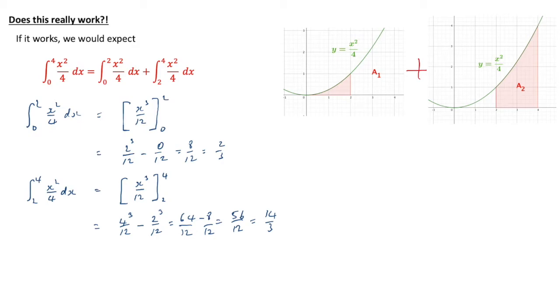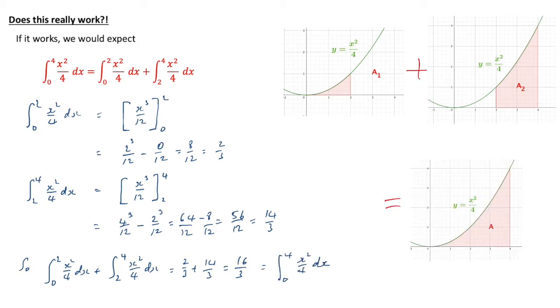Now we're going to add them. If we add those two together, that's going to give us our 2 thirds plus 14 thirds, which is 16 thirds, and this is, of course, equal to the value we had previously when we integrated between 0 and 4. So it obviously works for that. That doesn't prove it always works, but I can assure you, it does for everything you're going to be looking at.